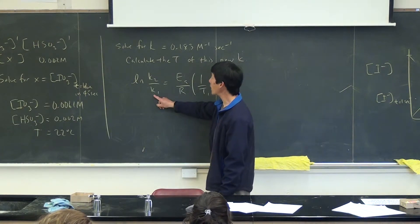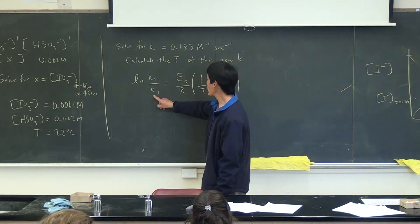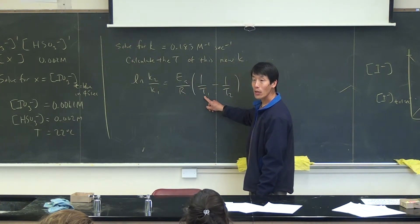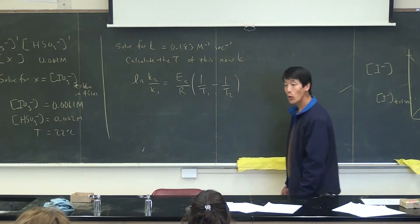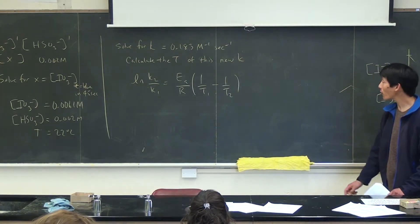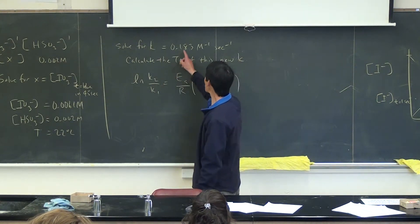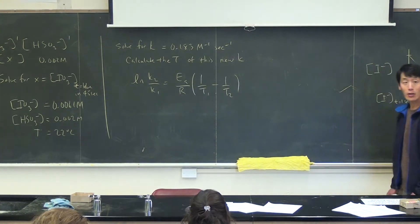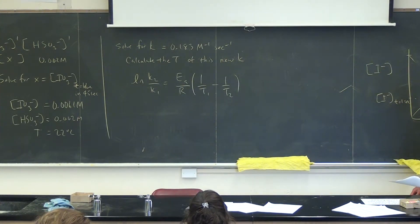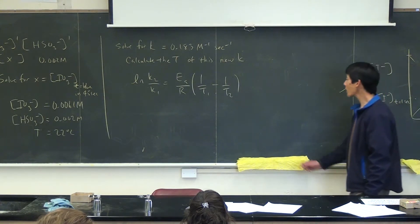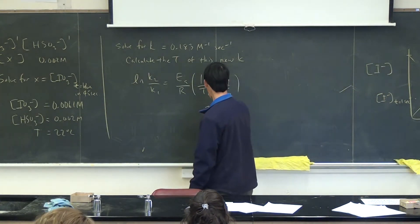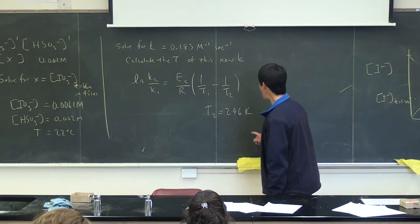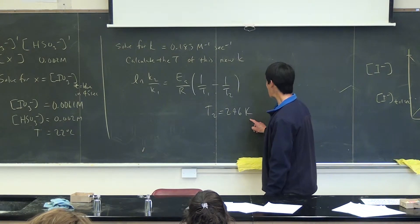Okay, so if you say that K1 is 0.60 and T1 is 22 degrees. In this equation, you have to use degrees Kelvin. Okay, so this is 22 plus 273 or 295. K2 is 0.183, then you solve for T2, and that will be your new temperature. Okay, so if you do it that way, the new temperature is 246 degrees Kelvin.